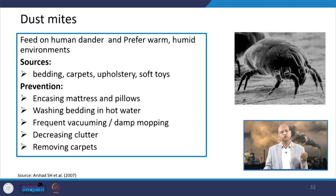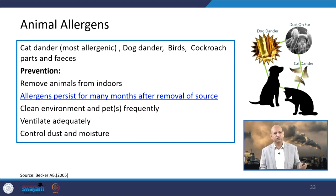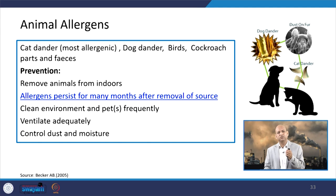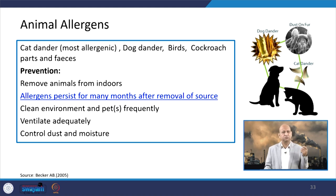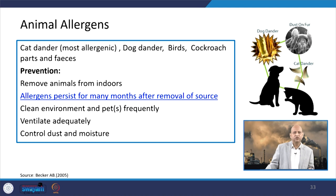Instead of carpets, it is better to have tiles that can be cleaned regularly and easily. Animal allergens from cats, dogs, their waste, or hair fall can contribute to indoor pollution. Even cockroaches, birds, and other animals kept indoors can release allergens from their hair and dander into the indoor environment.